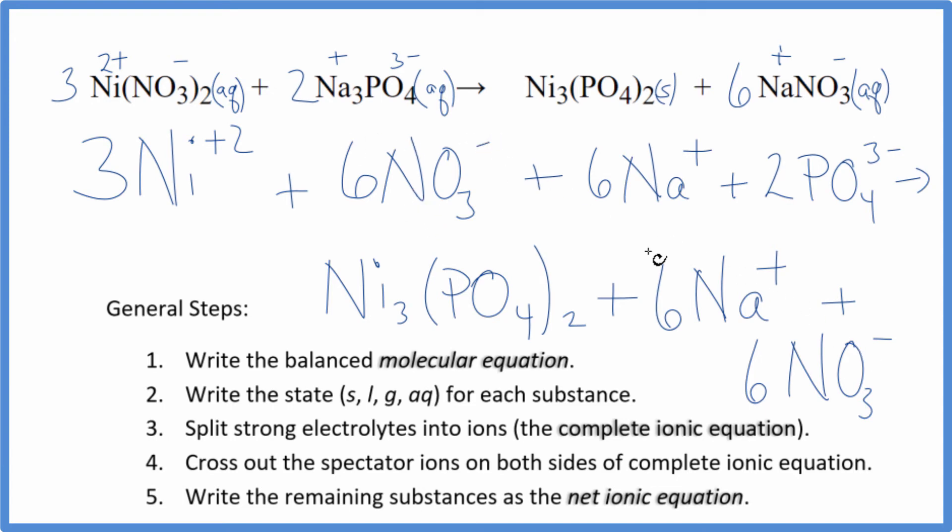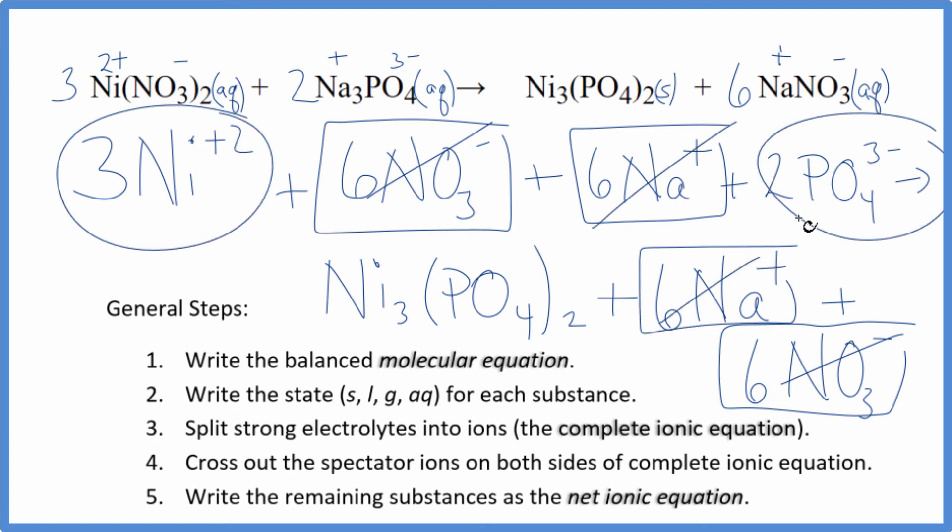I can see that I have six nitrates here in the reactants and in the products. So I can cross those out. I also have the six sodium atoms here and in the products. So I can cross those out. What's left, that's the net ionic equation for nickel(II) nitrate plus sodium phosphate. I'll clean it up, write the states in. We'll have our net ionic equation.